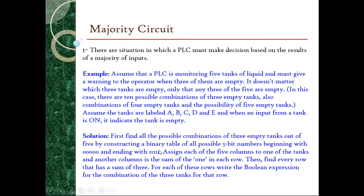We do this by constructing a binary table or truth table of all possible five-bit numbers, beginning with 00000 and ending with 11111. By assigning each of the five columns to one of the tanks, and another column for the sum of ones in each row, we then find every row which has a sum of three, meaning three tanks are empty, and write the Boolean expression from that combination.